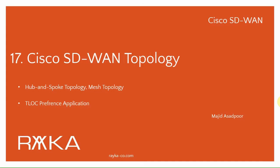Cisco SD-WAN topology has a full mesh topology by default — all sites can communicate with each other without any limitations. In this section, two other topologies, hub-and-spoke and mesh topologies, are implemented in the Cisco SD-WAN infrastructure.